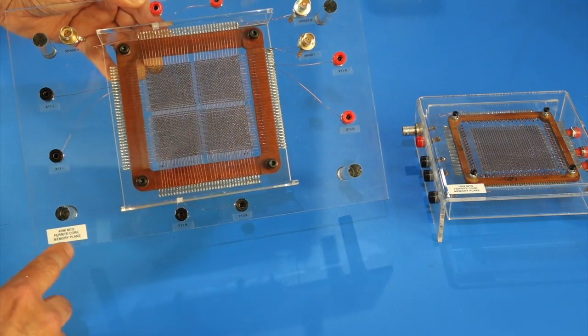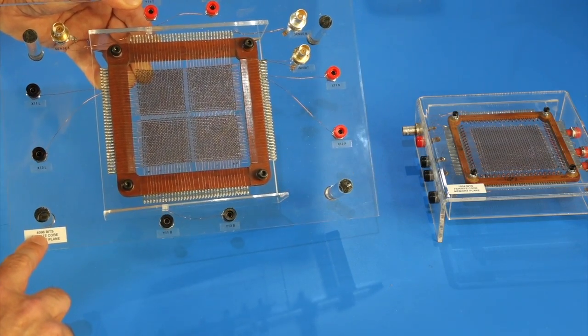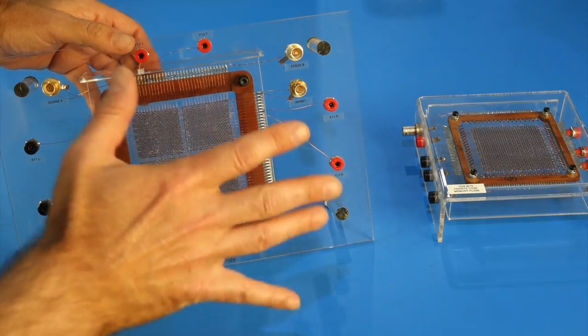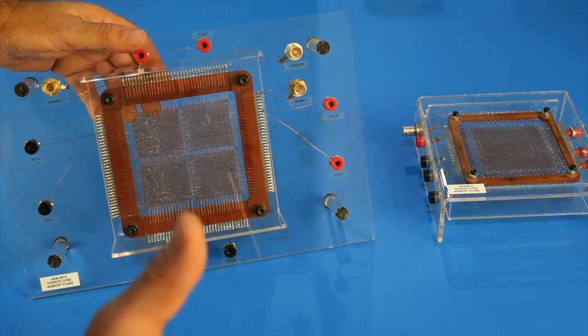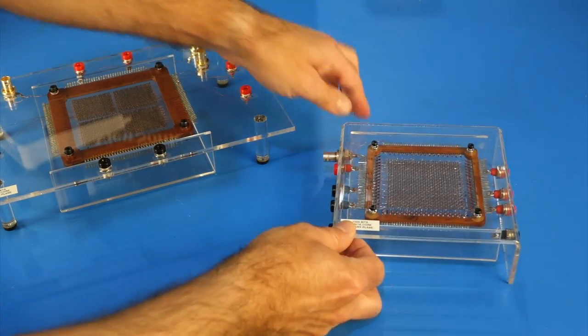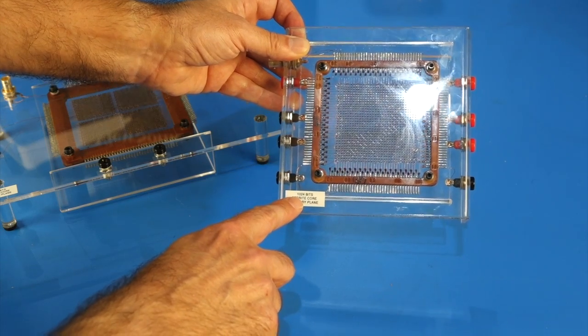So I have two planes. One is four kilobits, that was probably part of a four kilo word array, with many of those stacked, one for each bit. And I have a smaller one, it's one kilobit.